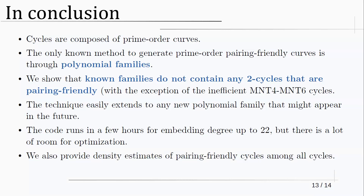A secondary result I wanted to mention is a formalization of the folklore notion that cycles are hard to find. What we did was provide a concrete density estimate: how likely it is to find a pairing-friendly cycle among all cycles. Of course, there are many cycles, but not too many pairing-friendly cycles — and it's nice to have some concrete results on this.